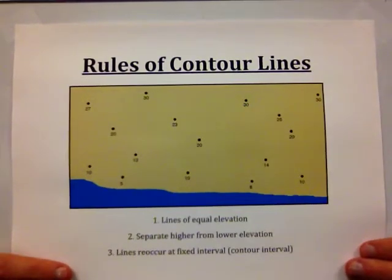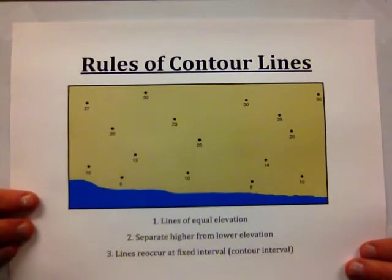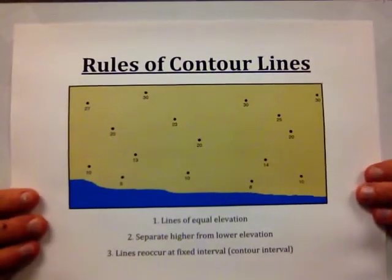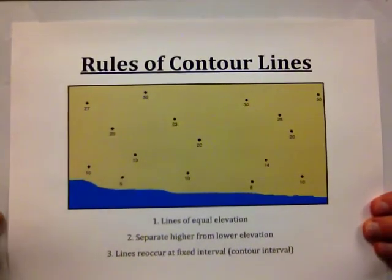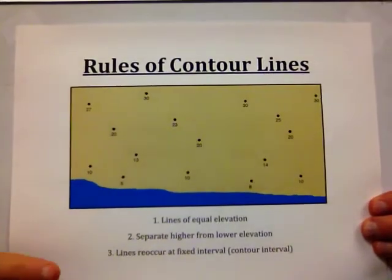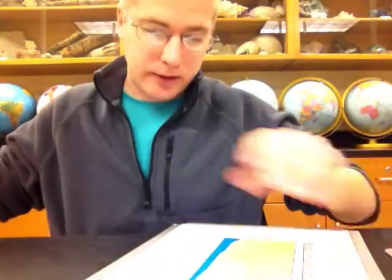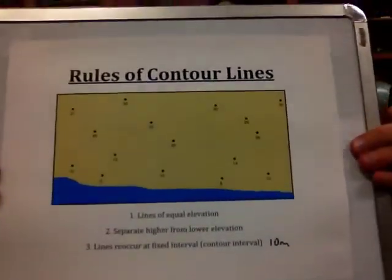The contour interval will always be given, or you will be able to calculate it, as we will see later in this video. Let's take this map with elevations in meters and use a contour interval of 10 meters. So our interval is 10 meters.